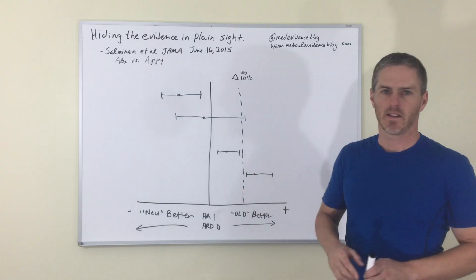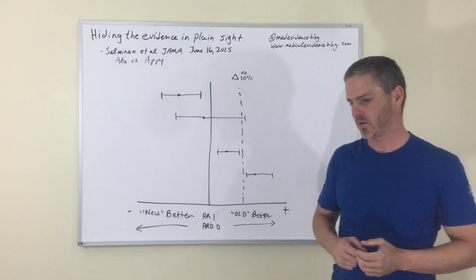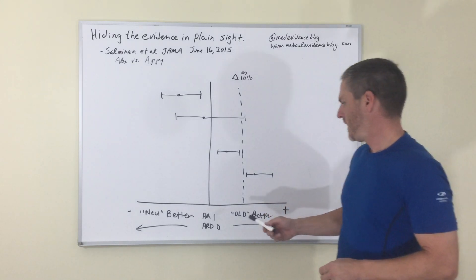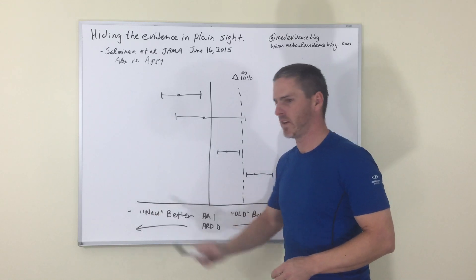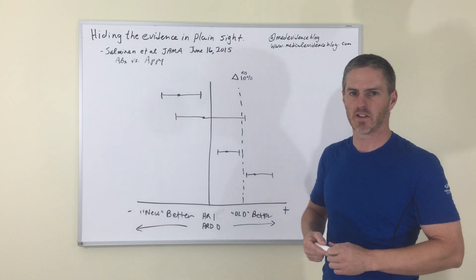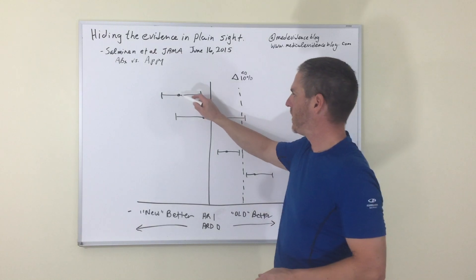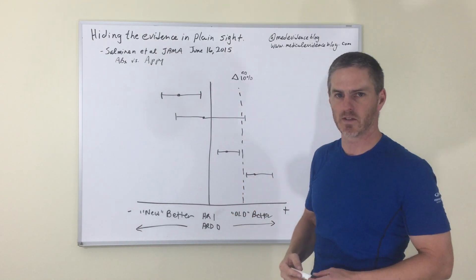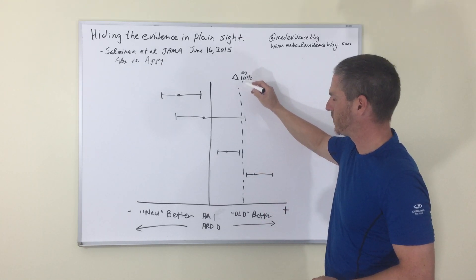Before we get to that, I want to refresh the consort figure one that we went over last time. So according to consort, and New England Journal does it like this also pretty much uniformly, if you have new is on the left, so negative differences favor the new therapy and positive absolute risk differences or hazard ratios above one favor the old therapy. So if you have here is unity, either hazard ratio of one or absolute risk difference of zero. Here is the pre-specified margin for non-inferiority, for example, 10% delta.